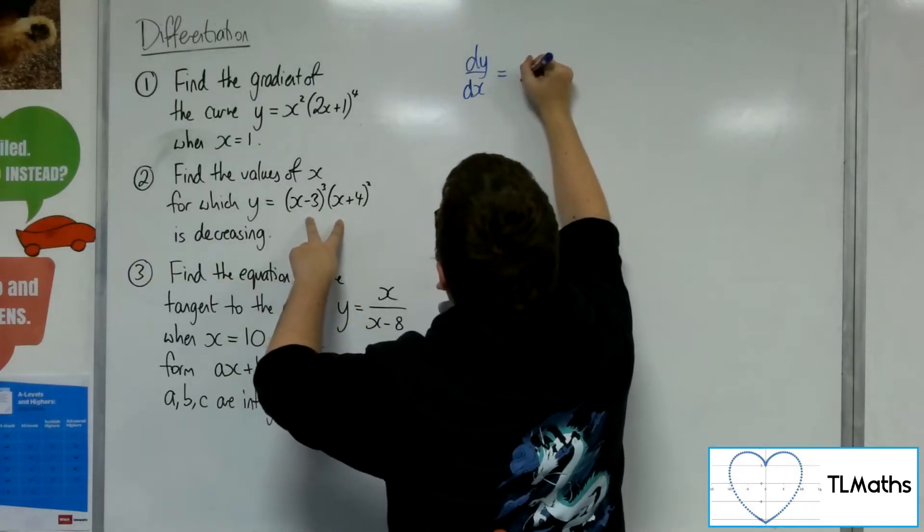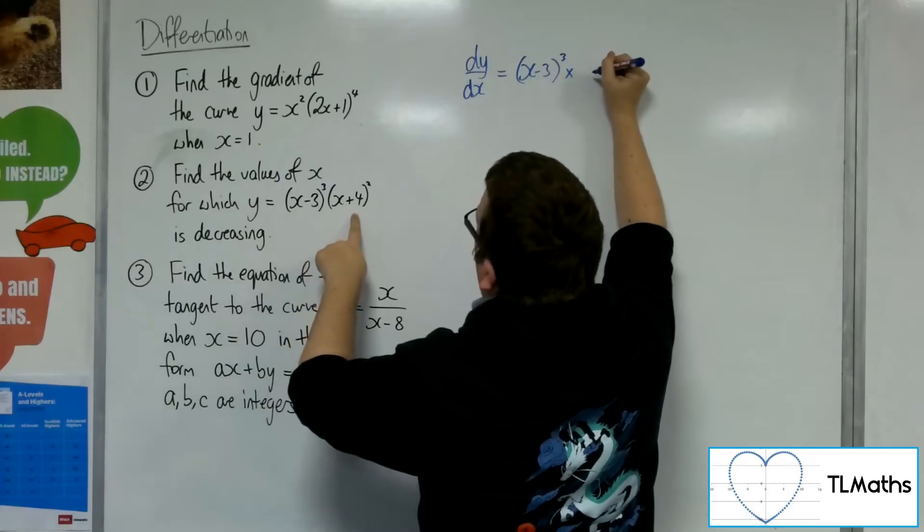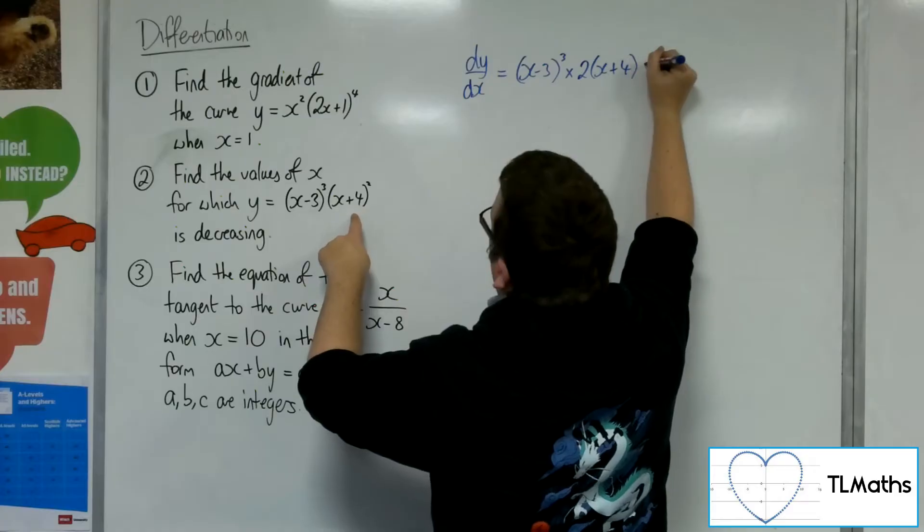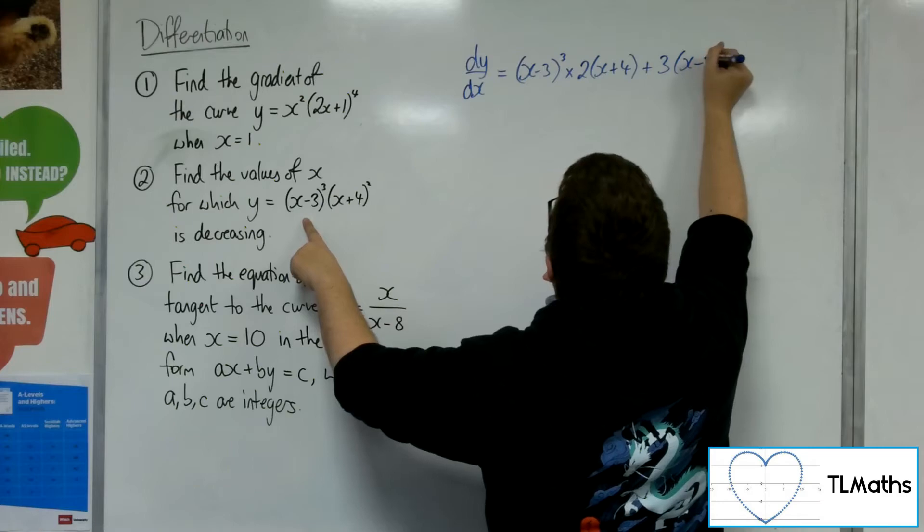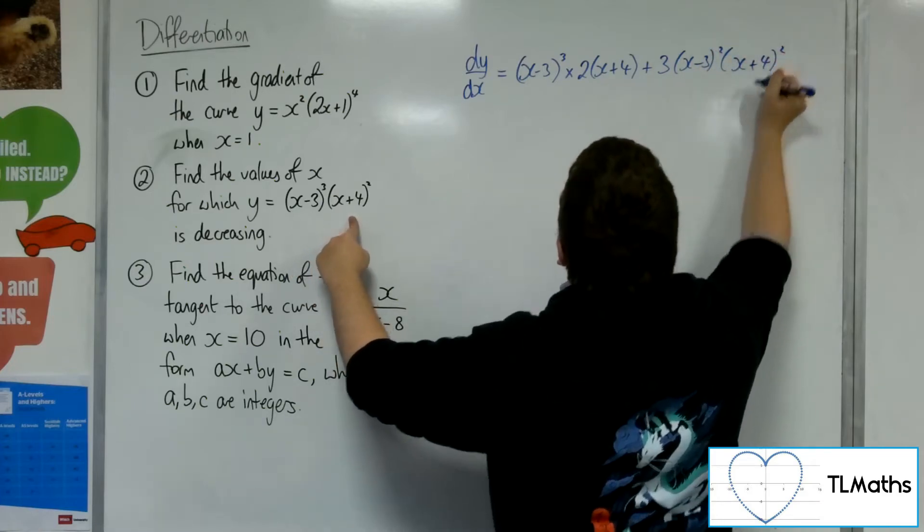So we're going to have x minus 3 cubed times the derivative of x plus 4 squared, so 2 lots of x plus 4 to the 1, plus the second times the derivative of the first, so 3 lots of x minus 3 squared times x plus 4 squared.